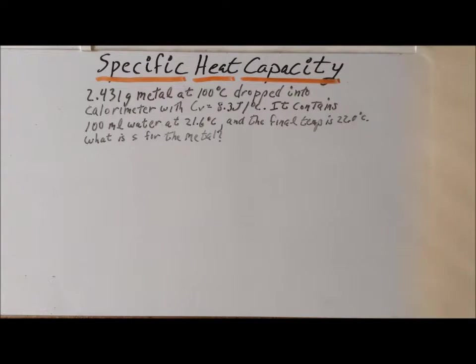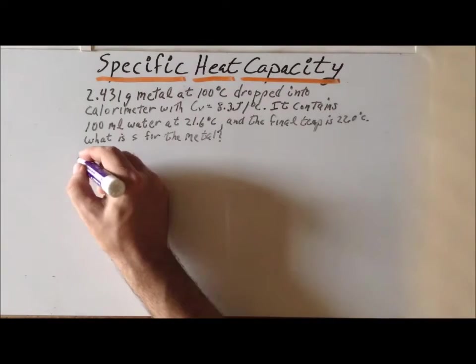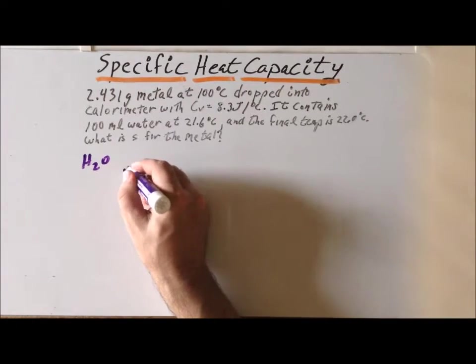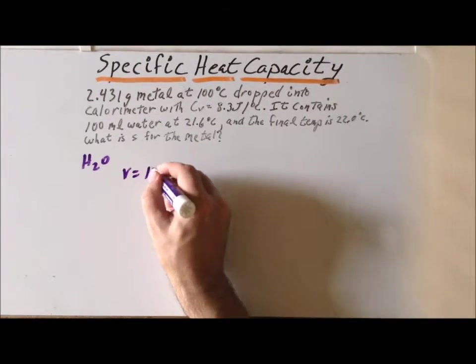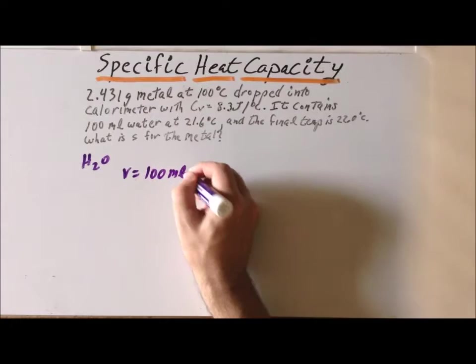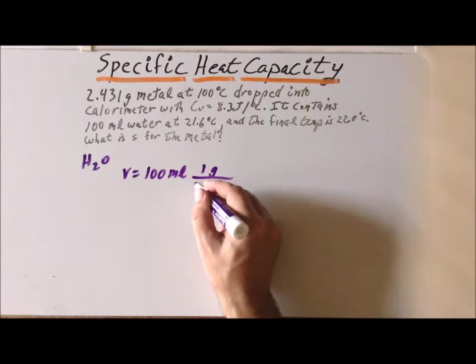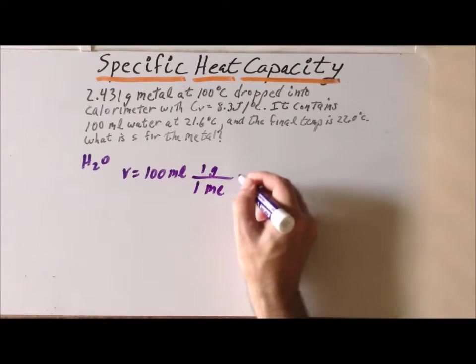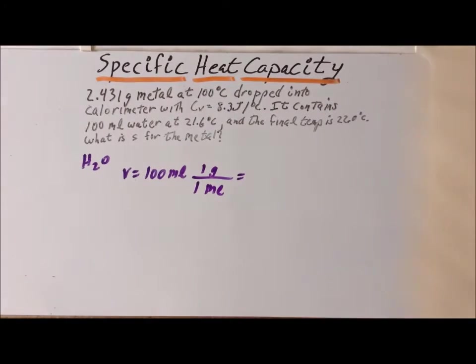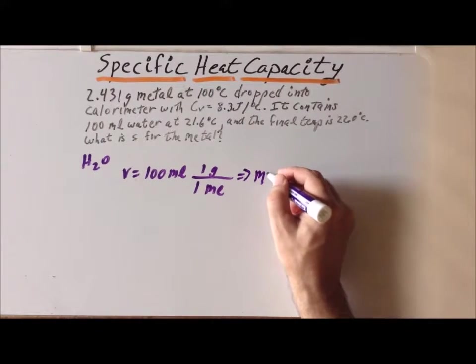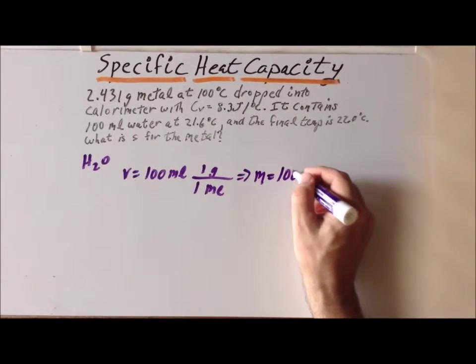First, we want to calculate the heat flow relative to the water in the calorimeter. So, we have H2O. We know that the volume is equal to 100 milliliters, and we can use the density of water that one milliliter of water weighs one gram to immediately find that the mass of the water turns out to be 100 grams.